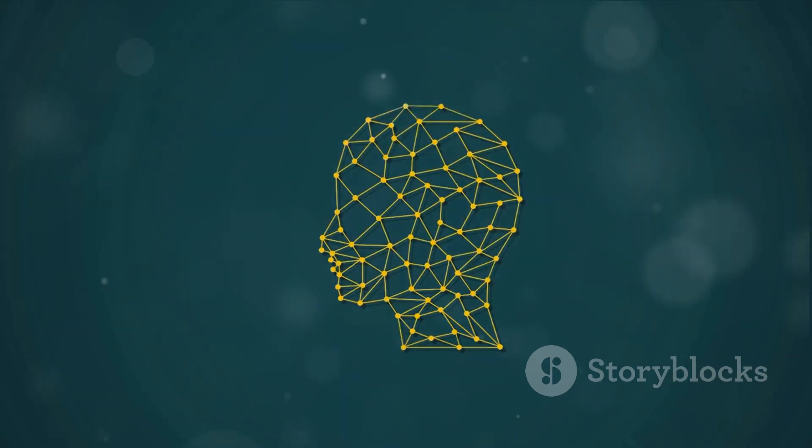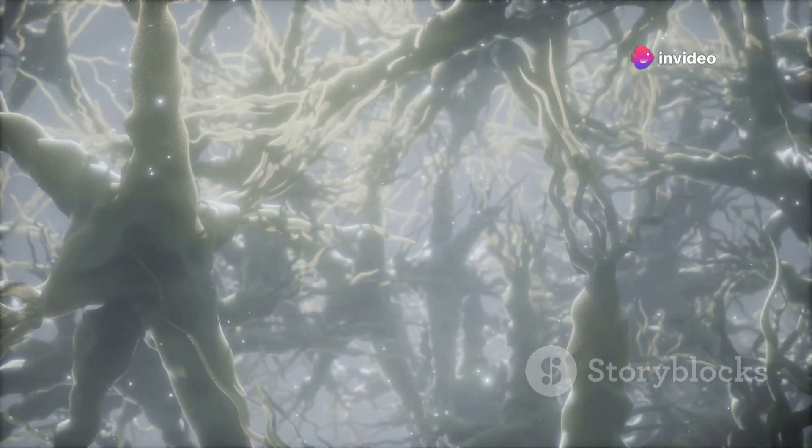Your brain is a bustling metropolis of roughly 170 billion neurons and glial cells. Imagine each of these inhabitants in a constant state of communication, exchanging signals, building bridges, and creating an unimaginable number of connections.